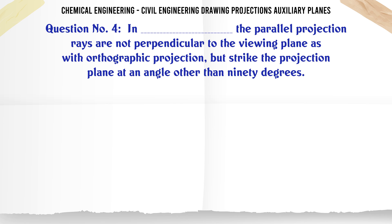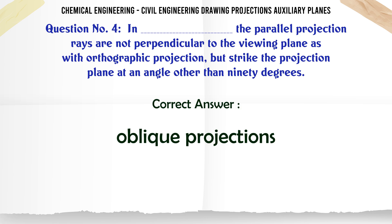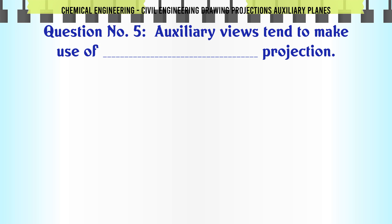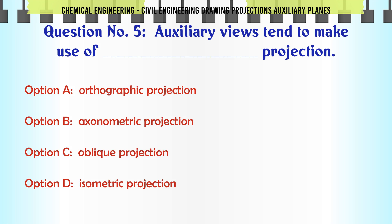In parallel projection, rays are not perpendicular to the viewing plane as with orthographic projection, but strike the projection plane at an angle other than 90 degrees. A) Isometric projections, B) Orthographic projections, C) Axonometric projections, D) Oblique projections. The correct answer is Oblique projections.